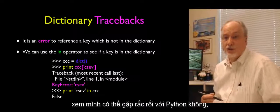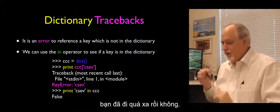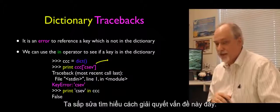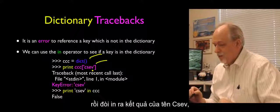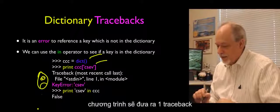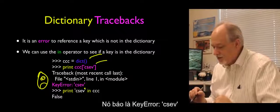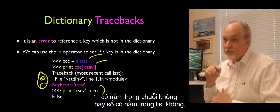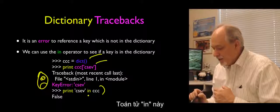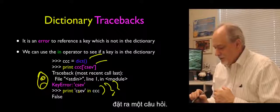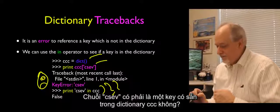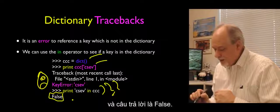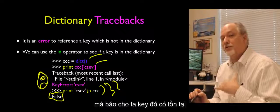We have to figure out when Python is going to give you trouble. One thing Python does not like is if you reference a key before it exists. If you simply create a dictionary and say print out what's under 'Csev,' it gives you a traceback — a KeyError: Csev. The thing that allows us to solve this is the 'in' operator. We've used 'in' to see if a substring was in a string or a number was in a list. Here it asks: is the string 'Csev' a current key in the dictionary? It returns False.